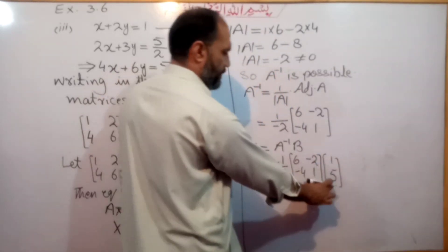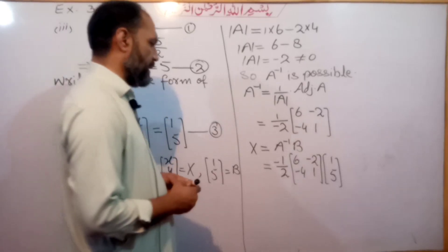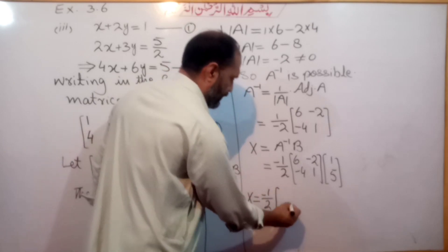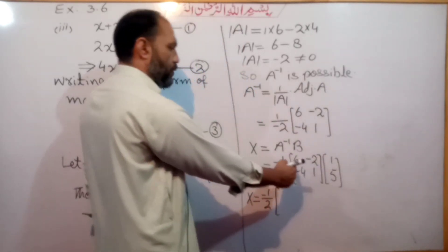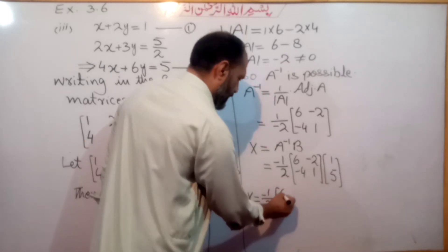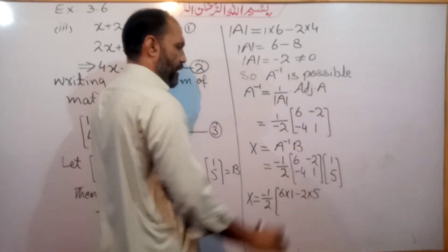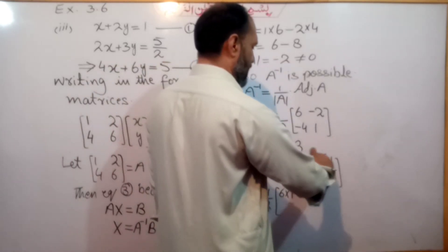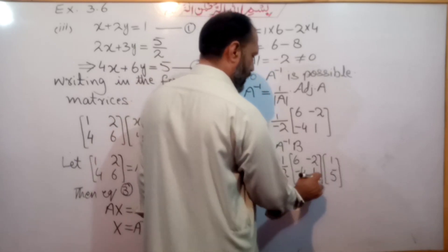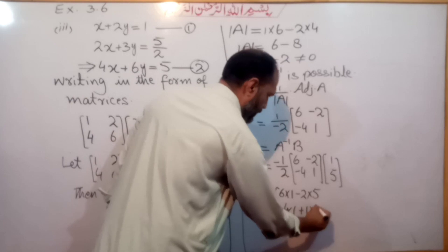Performing the matrix multiplication: first row times first column gives 6 times 1 plus minus 2 times 5, which is 6 minus 10 = minus 4. Second row times first column gives minus 4 times 1 plus 1 times 5, which is minus 4 plus 5 = 1. So the result is [minus 4, 1].